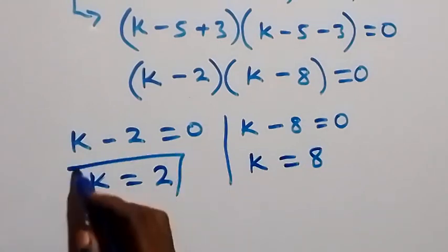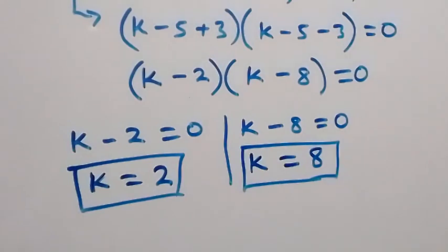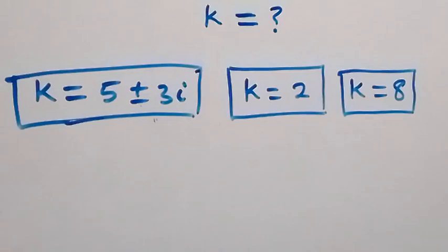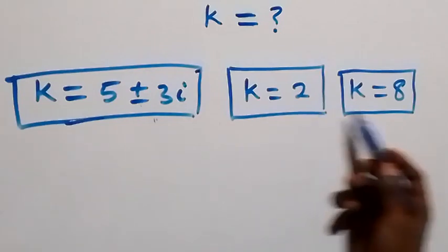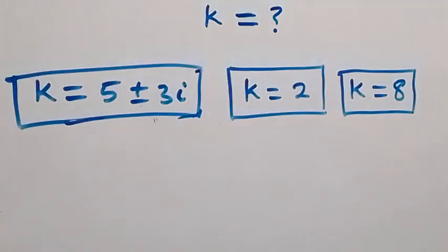All together we have four solutions: two real solutions k equals 2 and k equals 8, and two complex solutions k equals 5 plus or minus 3i. Thank you for watching — don't forget to subscribe for more videos, turn on the notification bell, share this video, give it a thumbs up, and put your comment in the comment section. See you next class, bye for now.